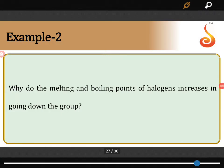Why do the melting and boiling points of halogens increase down the group?